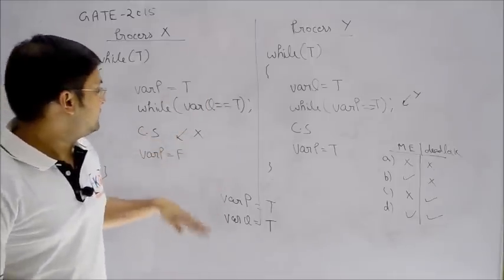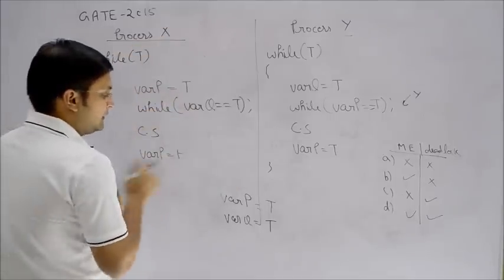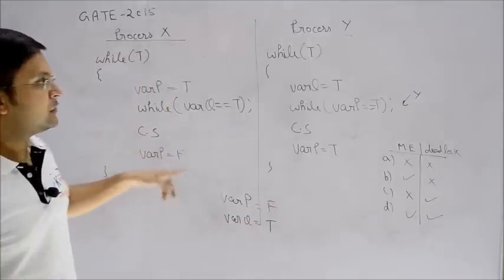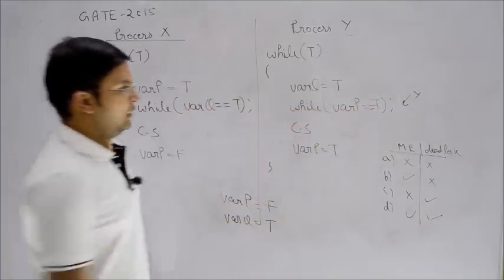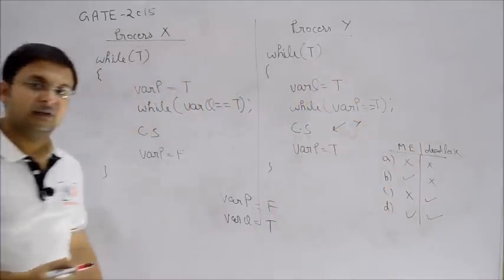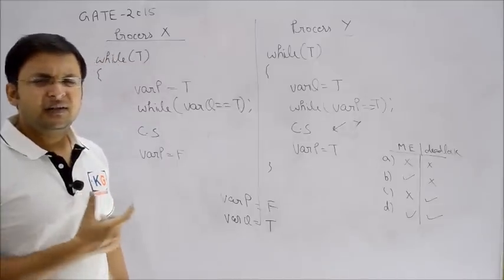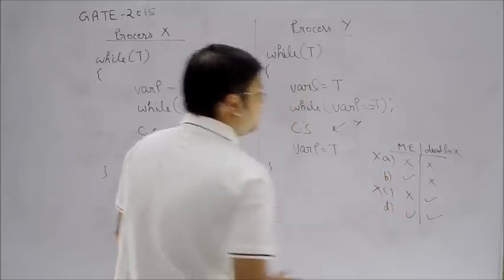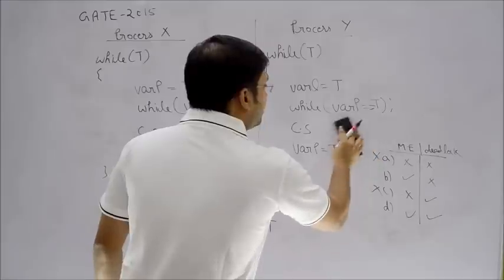After some time, process X comes out of the critical section and resets its variable P to false. When Y gets the CPU again, it checks P == true — but P is now false, so the condition is false, and process Y enters the critical section. So this solution clearly ensures mutual exclusion. Options A and C are incorrect. Now we need to check for deadlock, since the question also asks about that.